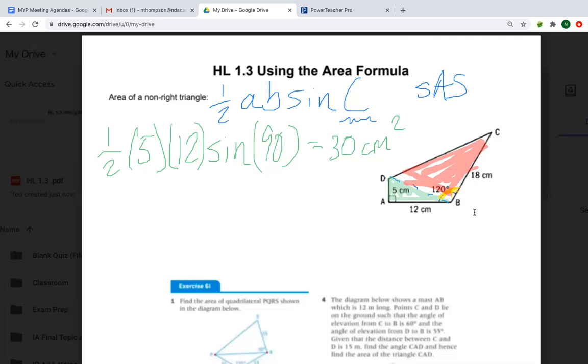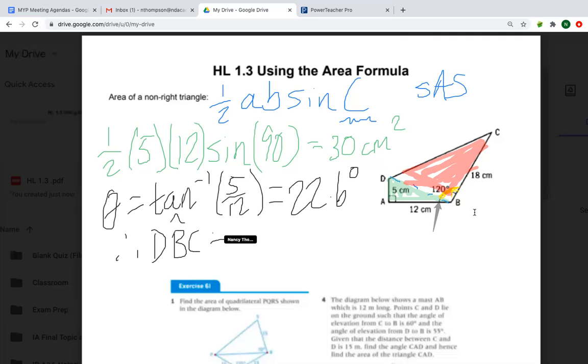So that small angle here, right here, that small angle is going to be calculated using our tangent identity because we have opposite and adjacent. So therefore, I know that theta is equal to the tan inverse of 5 divided by 12, which is 22.6 degrees. Okay, now this is really great because now I can figure out what the other half of that angle is by doing 120 minus that. So therefore, I know that the angle DBC is equal to 97.4 degrees.